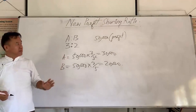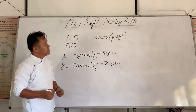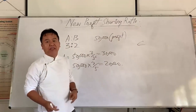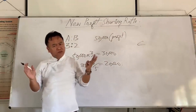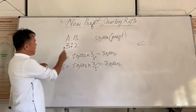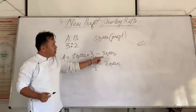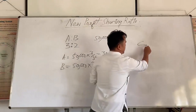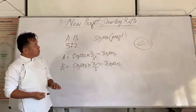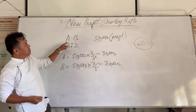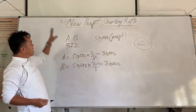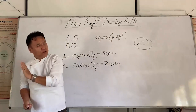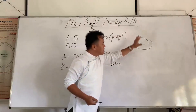Now what happens is if A and B admit a new partner C into the firm, then we have to calculate the new profit sharing ratio. The reason is A and B are no more going to get the same amount of profit — 30,000 and 20,000 — because they sacrifice a part of their share in favour of C. If the profit of 50,000 is distributed amongst A, B and C, then A and B will get less profit because they sacrificed a part of their share in favour of new partner C.